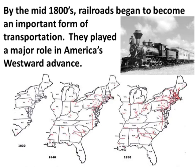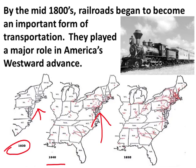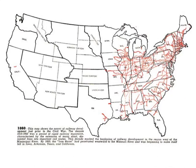By the mid-1800s, railroads began to become an important form of transportation and played a major role in America's westward advance. Looking at 1830, there are very few railroads built in the United States. By 1840 there are a few more, especially along the Atlantic coastline. By 1850 they're even more concentrated in the industrial northeast. By 1860, railroads had spread further west, but they were very heavily concentrated in the northern states — a factor that played a major role in the American Civil War.